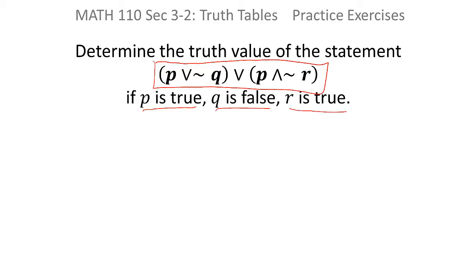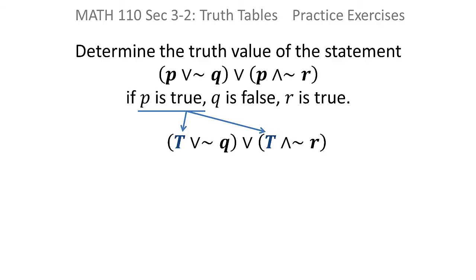If we know the truth values of the individual simple statements, then the easiest way to answer this question is just to plug in T for the statements that are true, that would be P and R, and false for the one that's false, which is Q. And then begin simplifying.